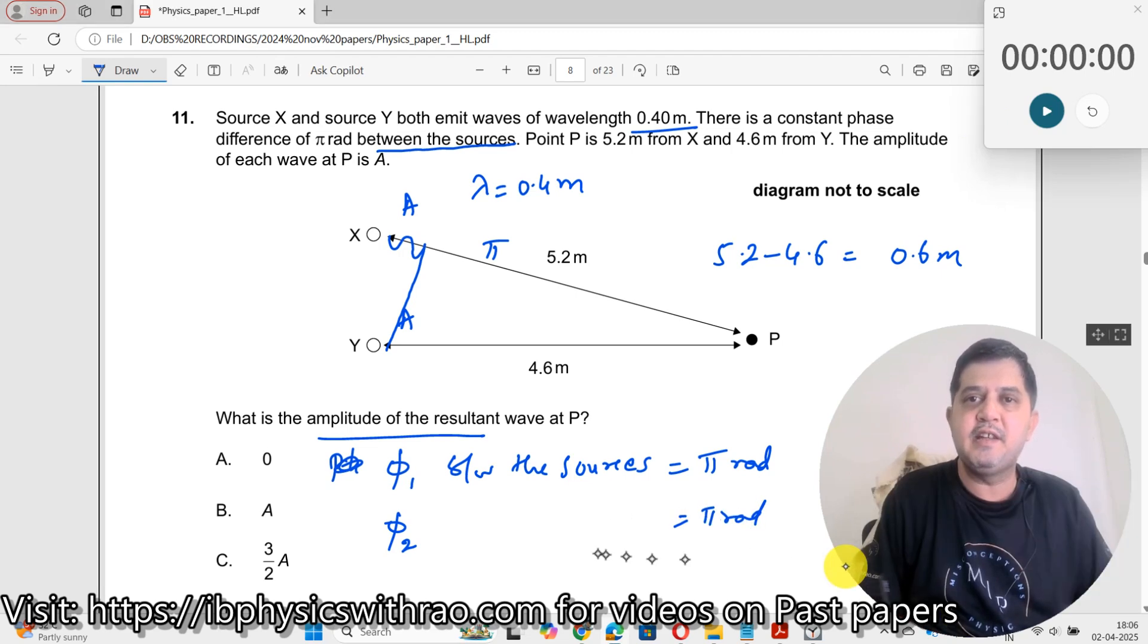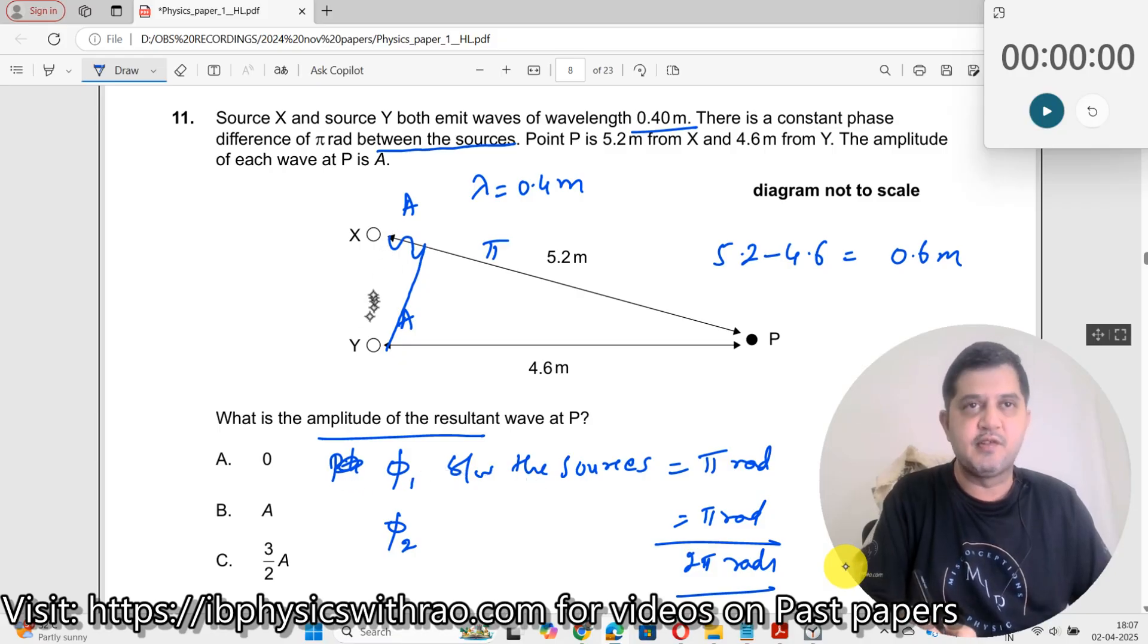So the total path difference that I get over here is seem to be 2π radians. One path difference due to the sources, the other path difference due to the waves that they are emitting. So as a result, total path difference is 2π radians.